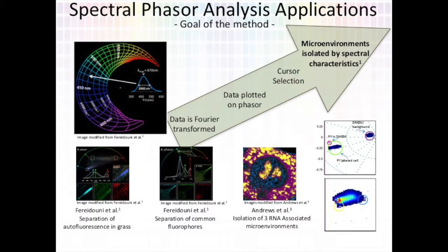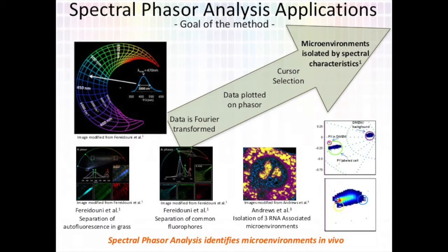Just to the right of that, we can see application to the live cell environment. Here, spectral differences in the fluorescent probe Pyrone Y have been used to isolate RNA microenvironments. What's important here is that these microenvironments have actually been isolated in a living cell. If we look to the phasor just to the right of that, we have a purple cursor, a yellow cursor, and a blue cursor. These cursors are isolating the pixels in the image that have those specific spectral profiles. This past work shows us that spectral phasor analysis is able to isolate microenvironments based on spectral profiles and that it's also applicable to the live cell environment.